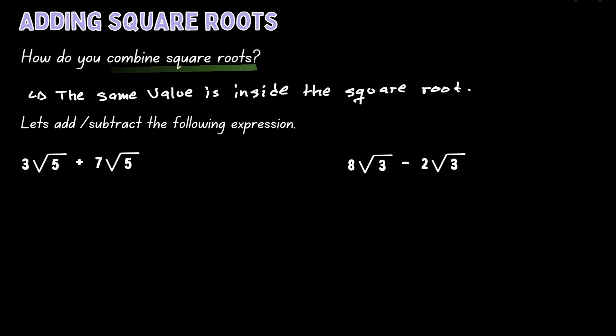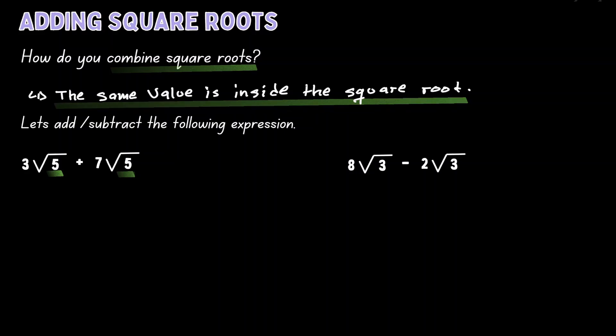Let's demonstrate that by looking at the following expressions. In the first expression on the left, we want to get the value 3 square roots of 5, and then we want to add 7 square roots of 5. Notice that in the first term, the value inside the square root is 5, and in the second term, the value inside the square root is also 5. Because both terms have the same value inside the square root, then we can add them up.